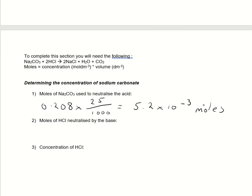Now, the moles of the HCl neutralized by the base. I need to look at my ratio for this. So as we can see, it's a 1 to 2 ratio. So for every 1 mole of sodium carbonate, 2 moles of hydrochloric acid are neutralized.